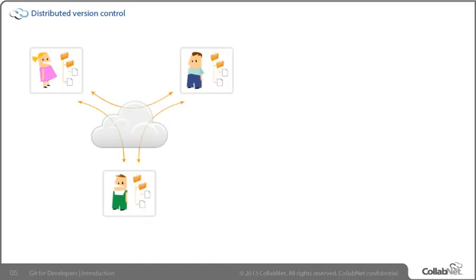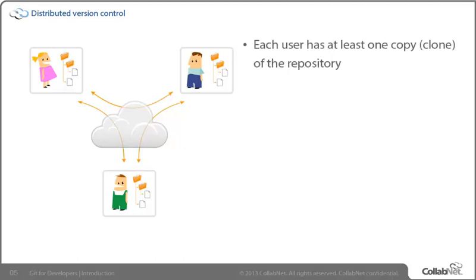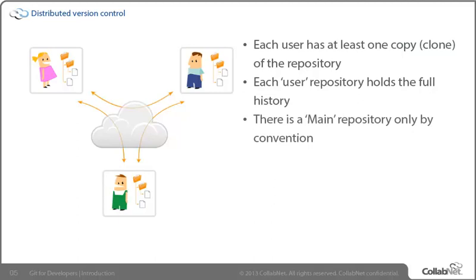Git and some other tools come along using a different approach — one we could call either decentralized or, more often, distributed version control. With this model, the user doesn't get just one revision of the files and folders under control, but in fact gets a copy — a clone — of the whole repository. That means they have all the history local to them in that clone. It allows us to communicate directly to that local repository, but it also means there is no internal convention or idea of having a central point of truth.